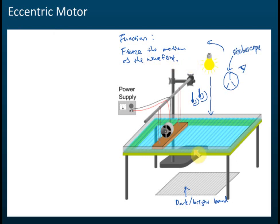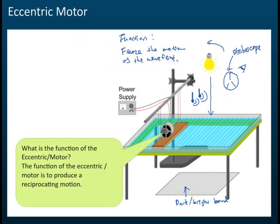There are a few more things you need to know about the ripple tank. For example, the function of the eccentric motor: it is to produce reciprocating motion or vibrations. However, this is less important because they usually won't ask about it in exams.